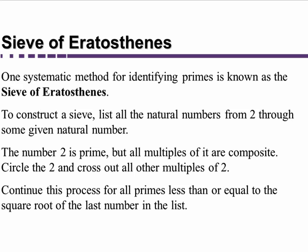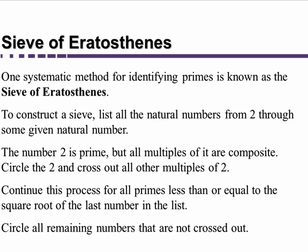So we would only have to consider the primes 2, 3, 5, and 7. Anything after that which is still not crossed off is going to be a prime. We circle all the remaining numbers not crossed off, and we have our solution.